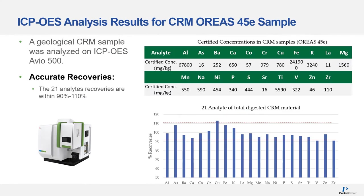The samples were analyzed on an Avio 500 ICP-OES. On the right-hand side you can see what the certified reference concentration should be, and in the graph at the bottom you can see that for all 21 elements, the analytes were recovered between 90% and 110%.